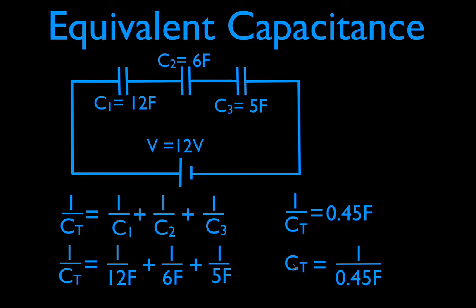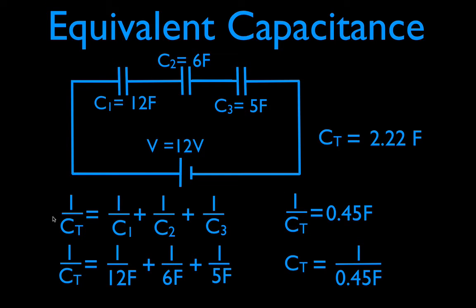So basically, in order to get the equivalent capacitance, I have to take 1 divided by what I got in the previous step. In my calculator, I simply go 1 divided by 0.45. Therefore, the total equivalent capacitance of this circuit is 2.22 farads.